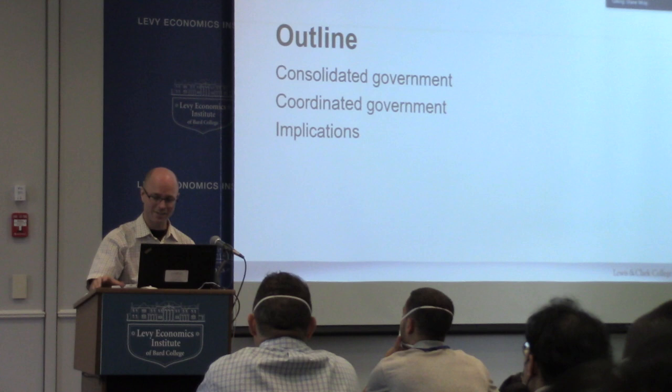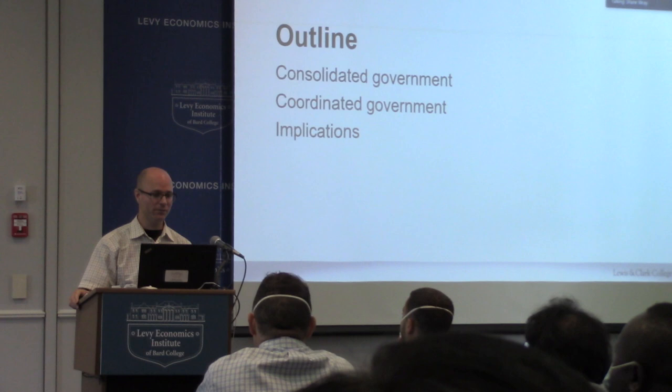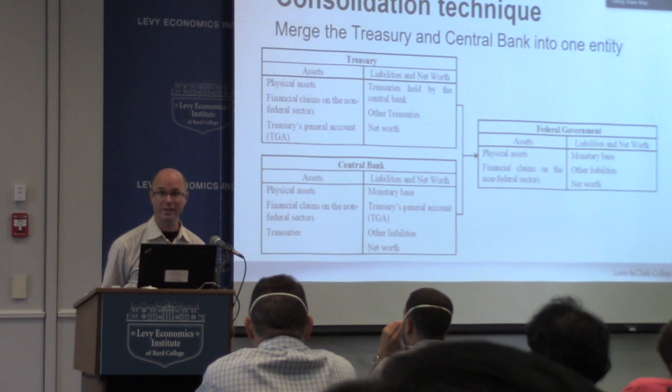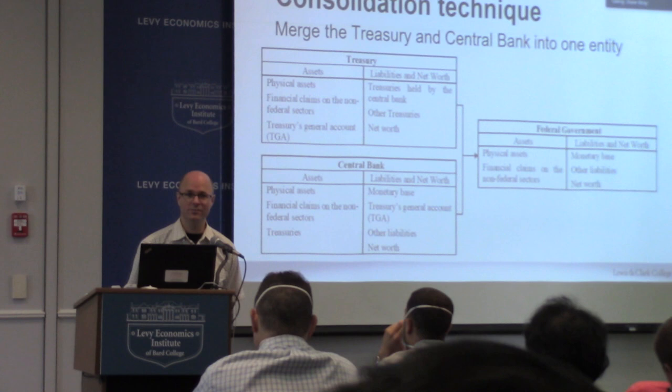We may not have time to cover all the implications given we're running a bit late. So: consolidated government first, then coordinated, and maybe implications. Consolidation here means we're merging the Treasury and the central bank into one entity called the federal government, the national government, the US government.